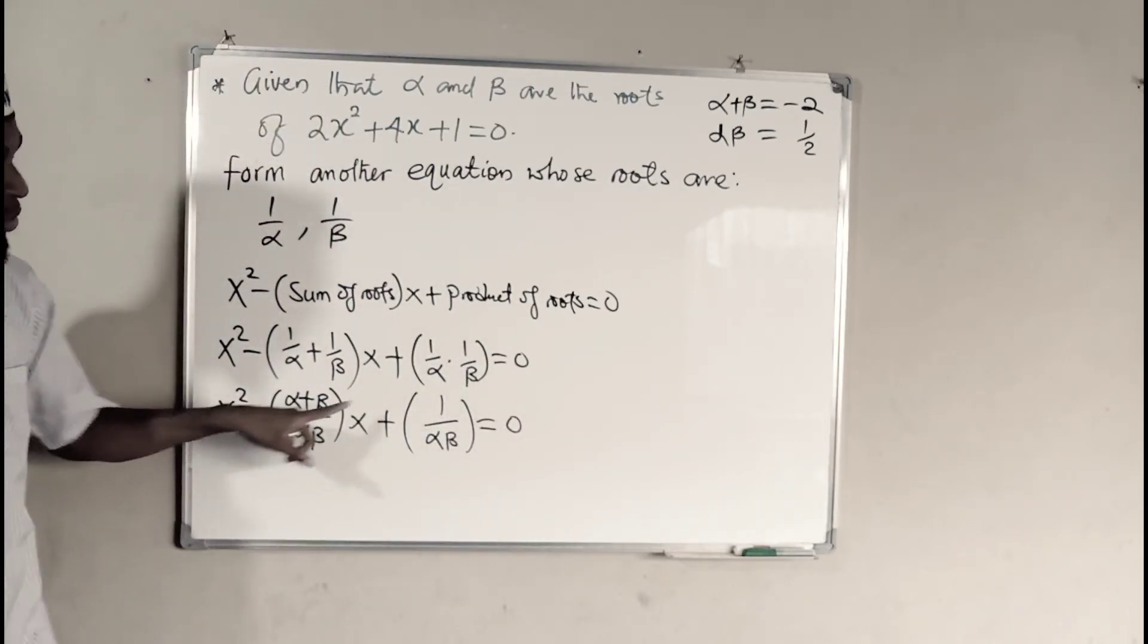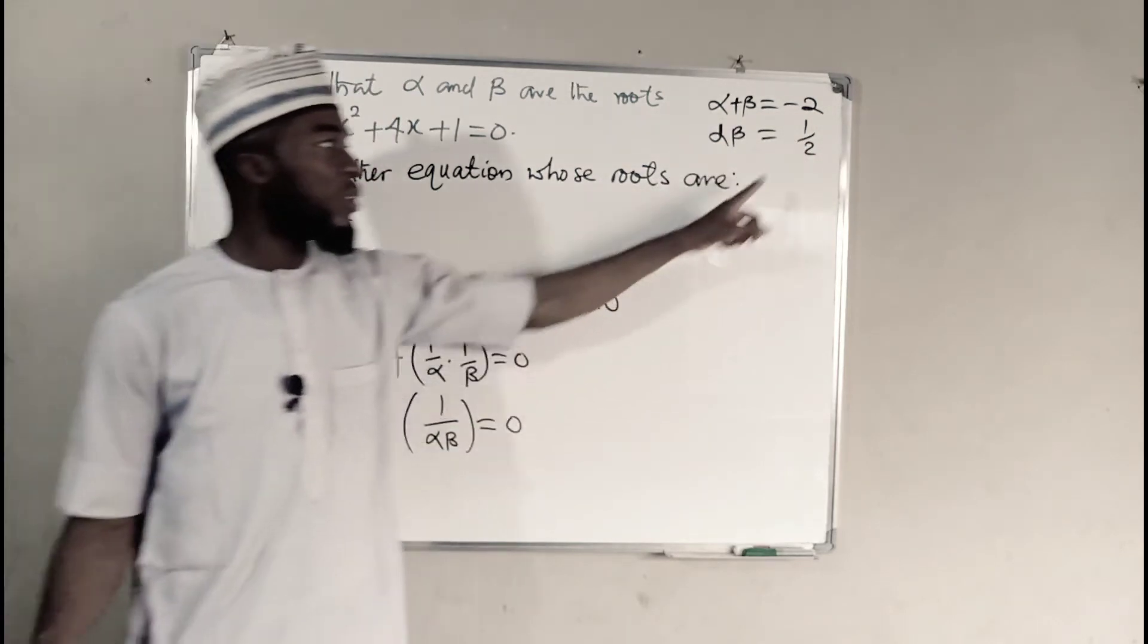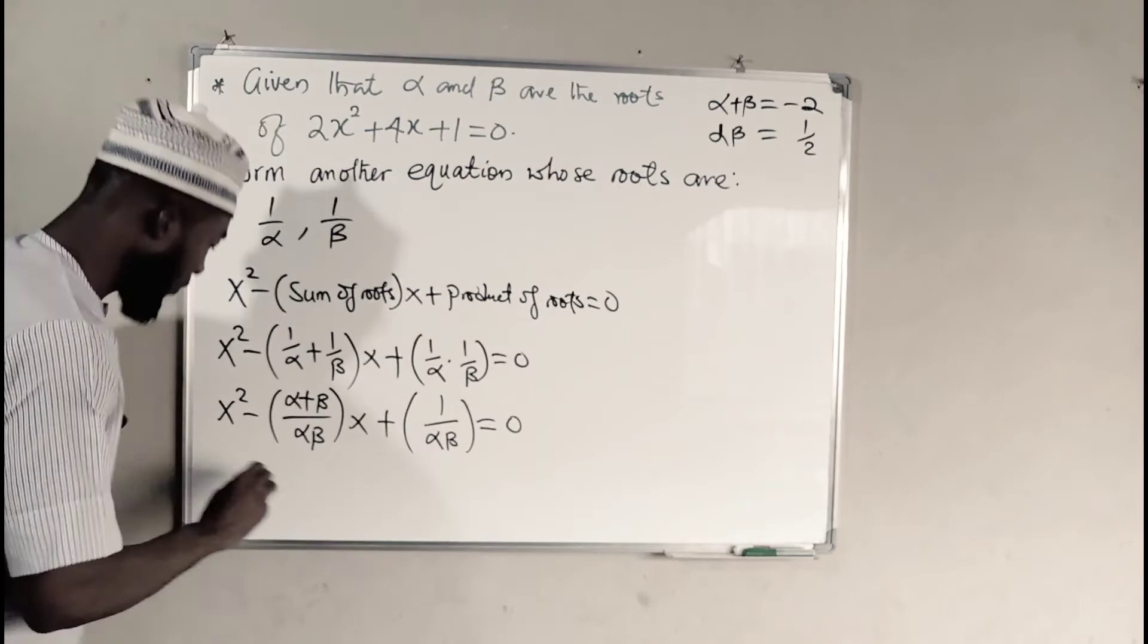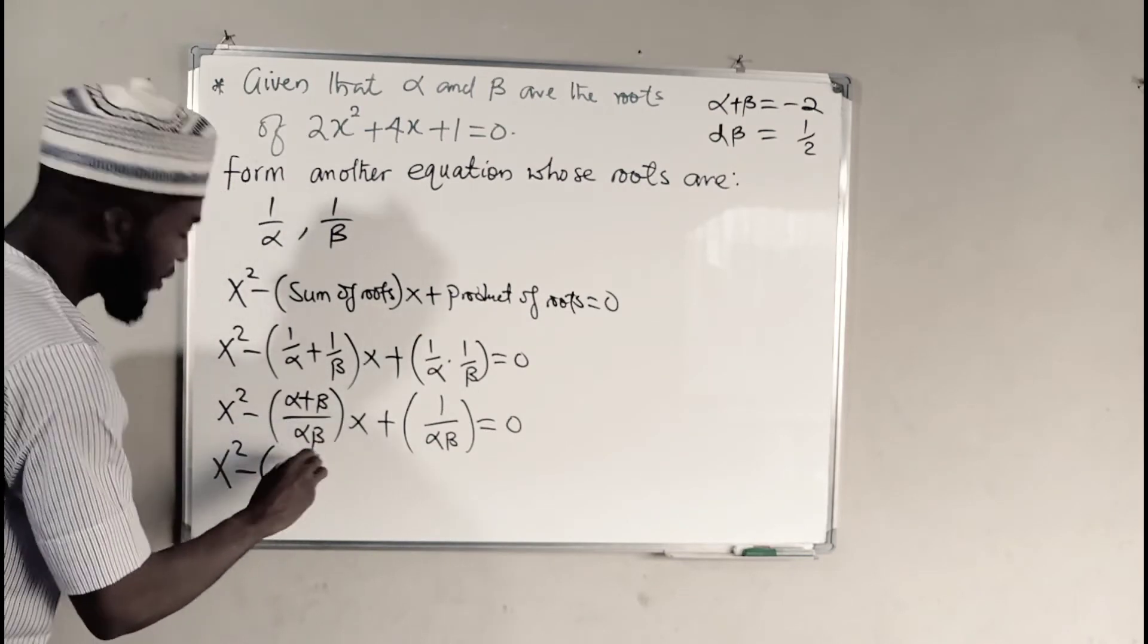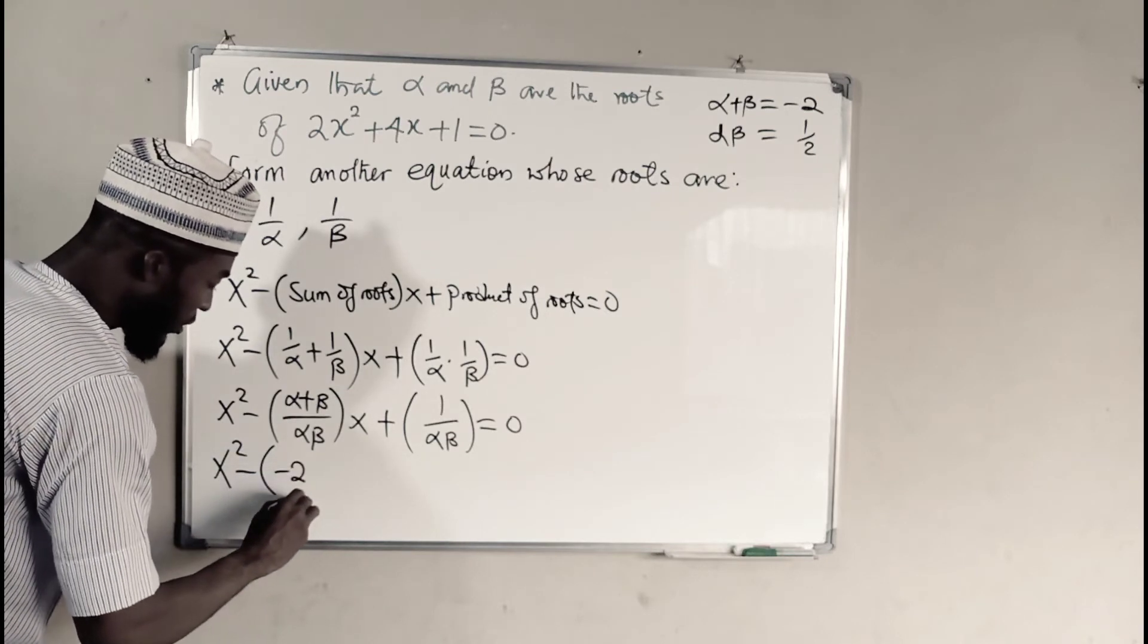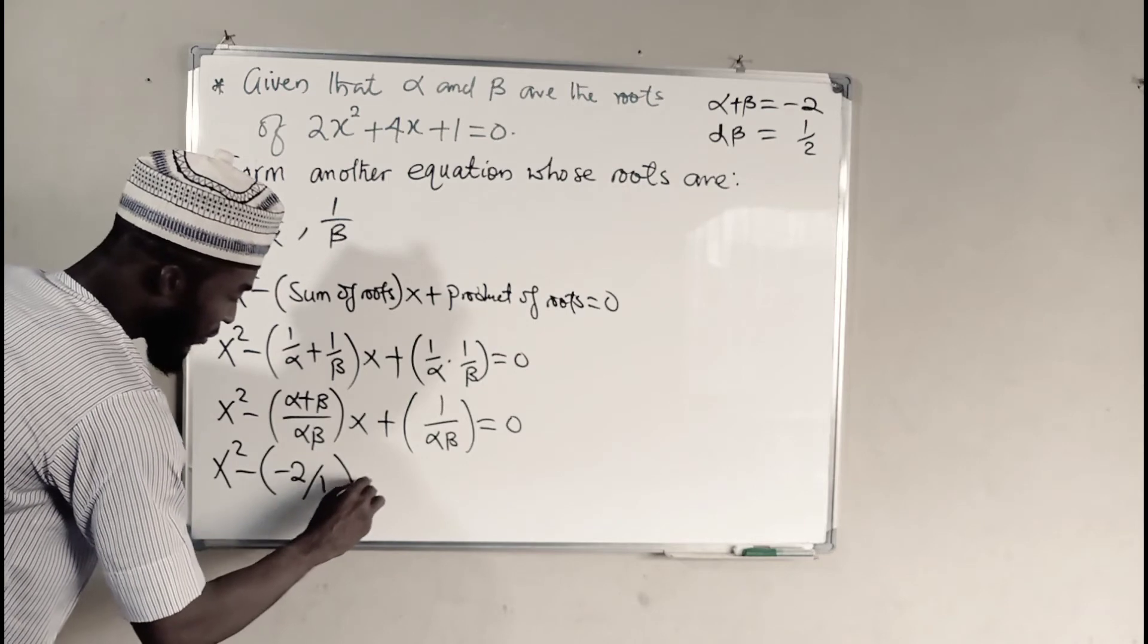But we have alpha plus beta to be equal to negative 2, and alpha times beta to be equal to 1 over 2. Hence, we can say this is x squared minus alpha plus beta is negative 2, divided by 1 over 2, all times x.